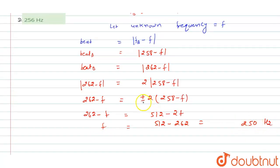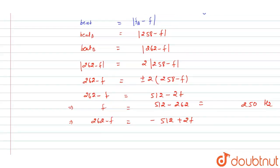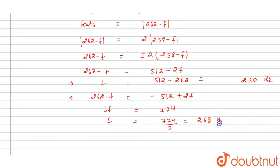Now we have to take negative sign. So if we take negative sign then what we will get: 262 minus f will be equal to minus 512 plus 2f. Now again we will solve this, so 3f will be equal to 774, so f will be equal to 774 divided by 3. This will be equal to - 2, remaining will be 1, so this is 258, because here will be 24, so 268 hertz.